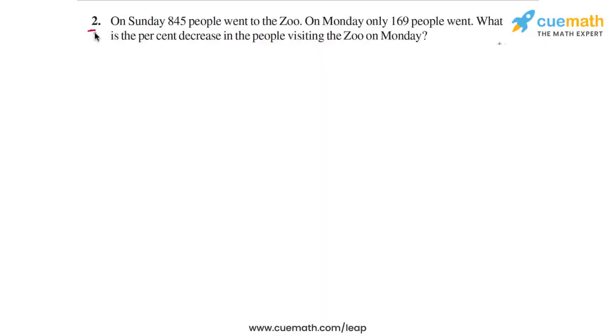In question 2 of the exercise, the problem statement says on Sunday, 845 people went to the zoo. On Monday, only 169 people went.